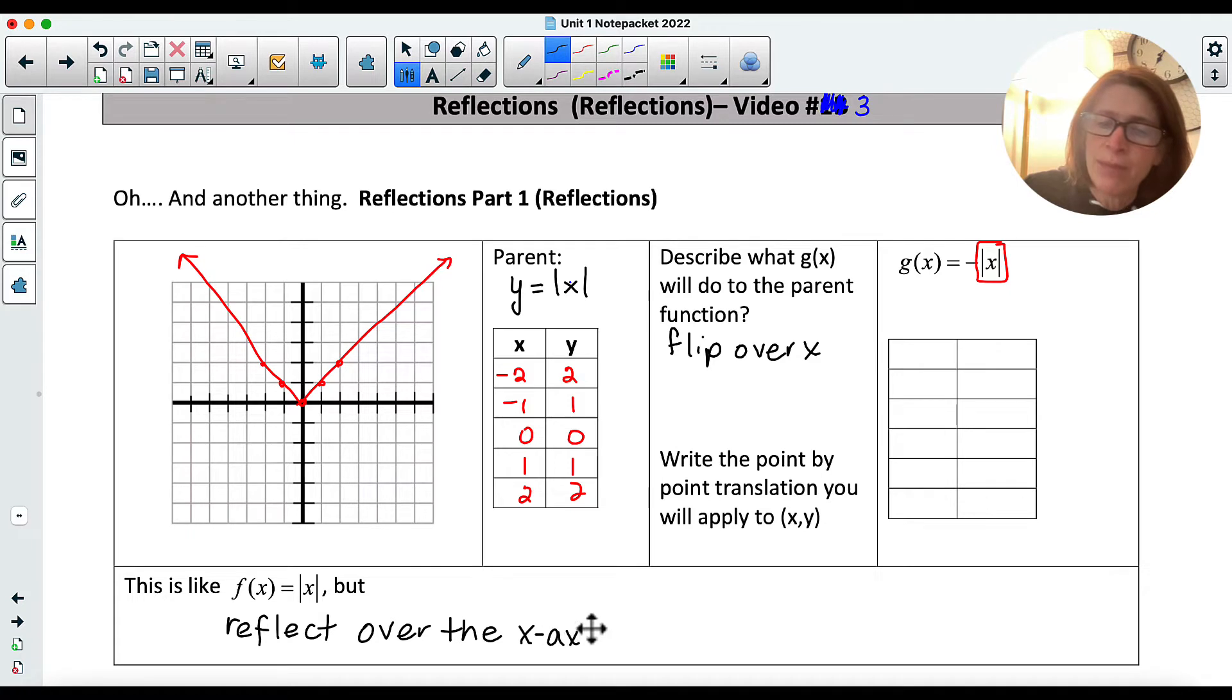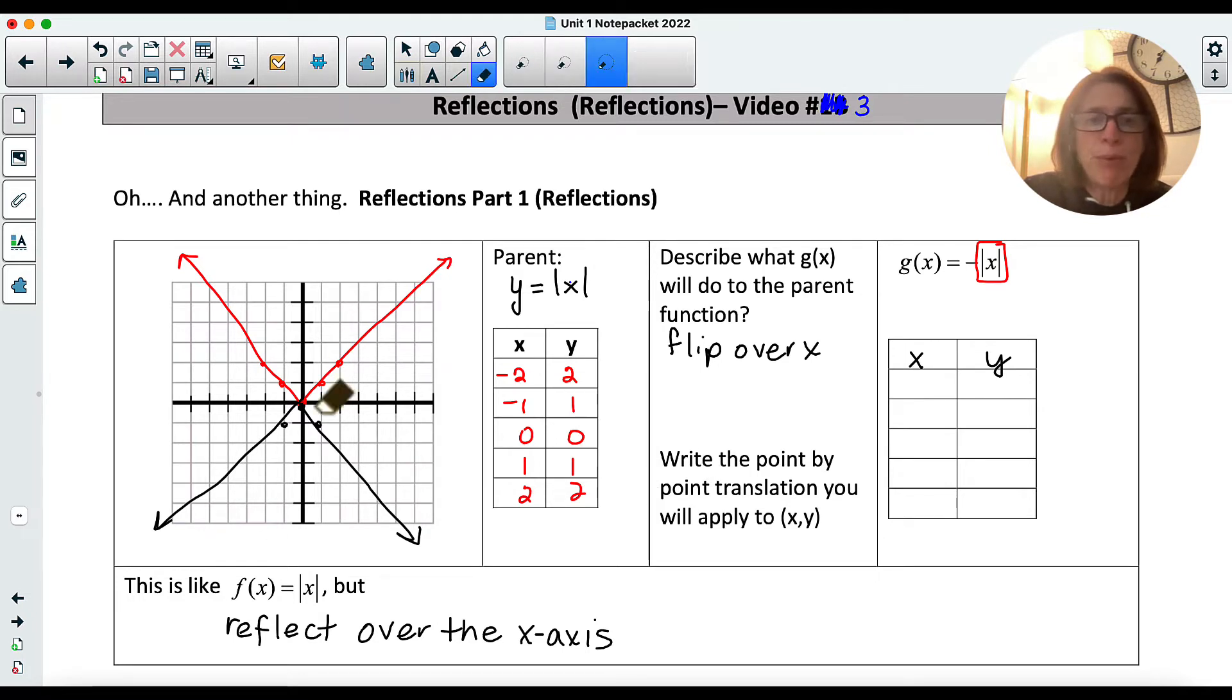Now it's really important for you to recognize that it's a reflection over the x-axis. And I want you to look at the points. So did the x's change? I'm hoping you're saying no, because the graph just did this. It just kind of flipped over like that. So what changed was not the x's, but the y's. So what happened to all the y's? Well, they became negative. So in thinking about that point-to-point translation we talked about, if I give you a point on the parent function, then x, y, the point-to-point translation of any point on the parent function is going to be x negative y, because all the y's will become negative. So my points here would be negative 2, negative 1, 0, 1, and 2, and then 2, 1, 0, 1, and 2, but they all would become negative.